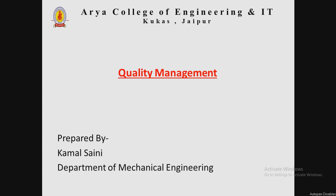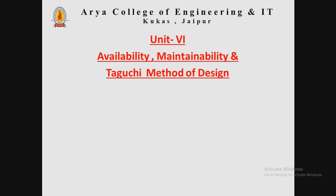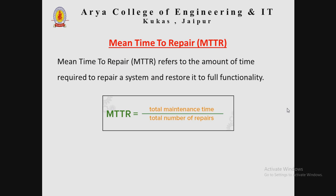In quality management, having earlier discussed sampling plans and OC curves, we will now cover Unit 6: availability, maintainability, and the Taguchi method of design. We begin with MTTR — Mean Time to Repair.